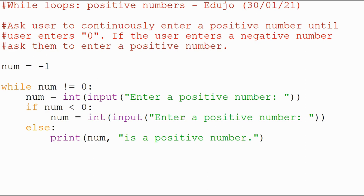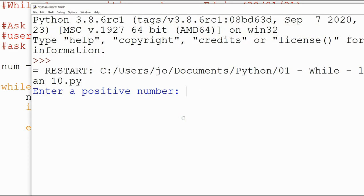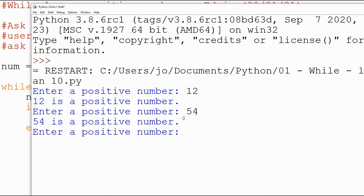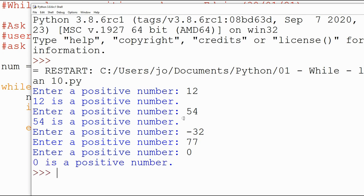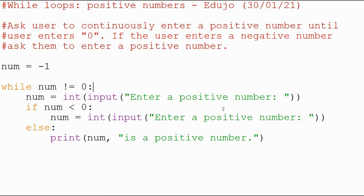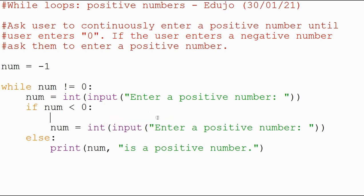So that looks like it'll work. Let's see what happens if we run it. Enter a positive number: 12—12 is a positive number. 54 is a positive number. Minus 32—enter a positive number, so it recognized that it wasn't. Then let's do 77, and then zero. Zero is a positive number, and it stops. Perfect.